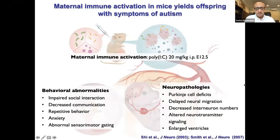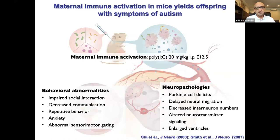We started this work many years ago in collaboration with Paul Patterson at Caltech using the MIA model. June introduced this model — infection during pregnancy leads to offspring that display many of the core features of autism, as well as interesting neuropathologies identified in subsets of the autistic brain. This model has significant epidemiologic support consistent with large population studies showing that infection coupled with fever during pregnancy leads to an increase in autism diagnosis in humans.